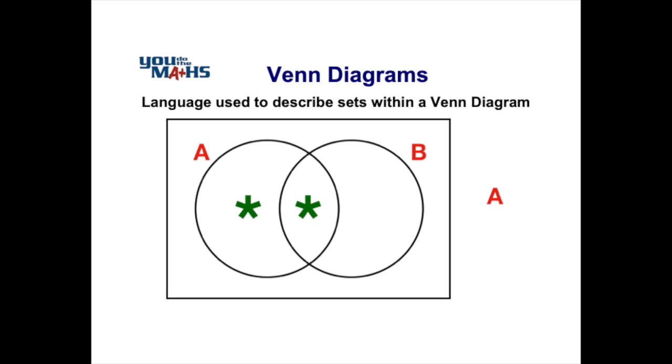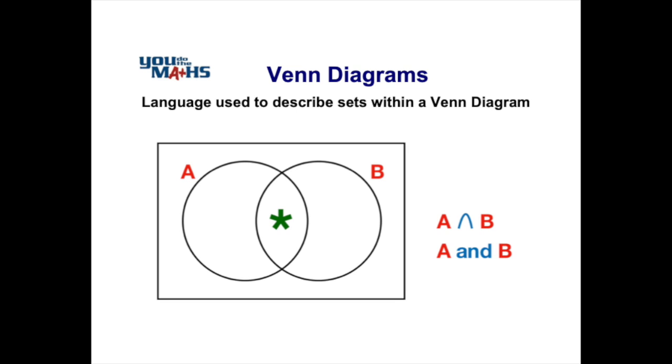If we talk about intersection of two sets, in this case A intersect B, we can also use the language 'and.' The set notation with that upside down U represents the intersection of two sets, and in terms of the diagram that's the area of the Venn diagram that's common to both set A and set B where the two circles overlap.